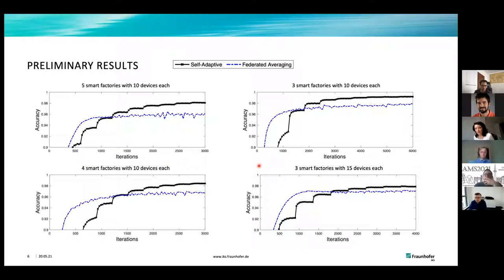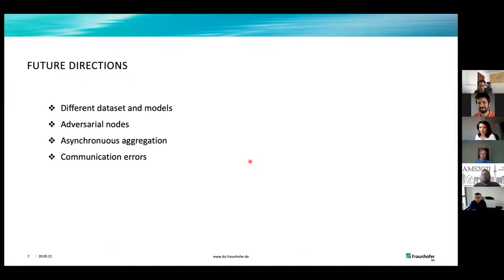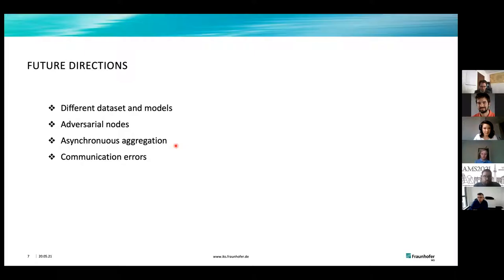Results were compared for different numbers of factories and devices with IID data sets for training. Future directions include evaluating different data sets, considering adversarial nodes, non-IID data, asynchronous aggregation where different devices send models at different times, and communication errors.